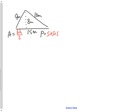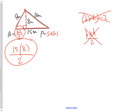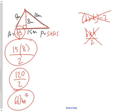For the triangle, the area formula is bh over 2. The base of this triangle is 15. The height is not the slant side but the perpendicular distance — 90 degrees — from the base to the apex, which is 8 meters. Step 1: write formula. Step 2: substitute. Step 3: simplify to get 120 over 2. Step 4: simplify to get 60 meters squared.